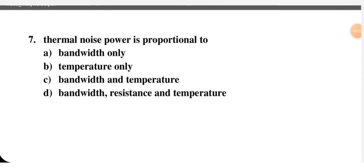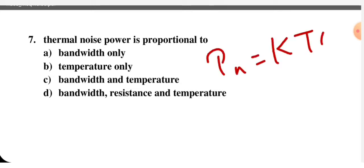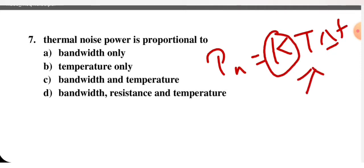Next question: thermal noise power is proportional to — bandwidth only, temperature only, bandwidth and temperature, or bandwidth, resistance, and temperature? From the formula Pn = kTΔf, k is the Boltzmann constant, T is temperature, and Δf is frequency (bandwidth). So noise power is proportional to both bandwidth and temperature. C is the correct option.